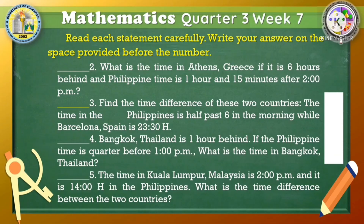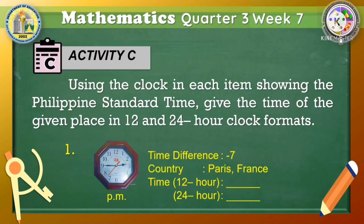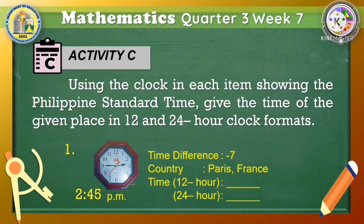Time is up. Here are the answers. Well done kids! For the last activity, using the clock in each item showing the Philippine Standard Time, give the time of the given place in 12-hour and 24-hour clock formats. Based on the clock, what time is it? It is 2:45 PM. This time you are asked to give the time in Paris, France, based on the given Philippine Standard Time. Remember, in relation to the Philippine Standard Time, Paris, France is seven hours behind.